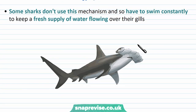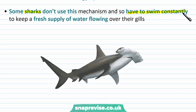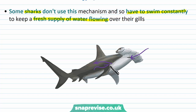Some fish don't use this exact same mechanism. For example, sharks don't have a buccal pump, so in order to keep water flowing from their mouth through their gills, they have to keep swimming forward constantly to maintain a fresh supply of water flowing over their gills. This just drives water in through the mouth and out of the gills all the time. If they stop swimming, water would be able to get in backwards, and this water might not be so fresh.